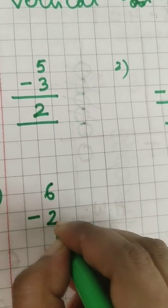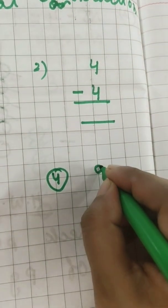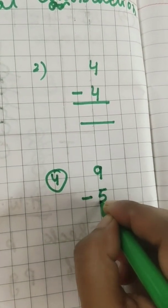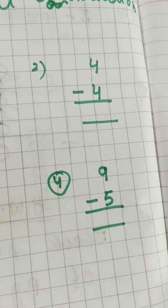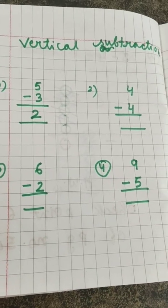6 minus 2, you will do it yourself. Then question number 4 is 9 minus 5. This also you will do it. Can you do it now, children? This is your classwork. Do it, okay?